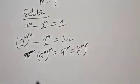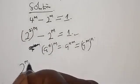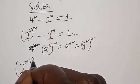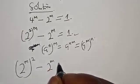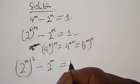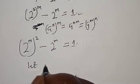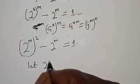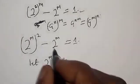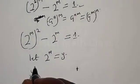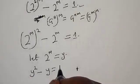Then from here we have 2 raised to power m, squared, minus 2 raised to power m equal to 1. Then we let 2 raised to power m equal to y. Therefore we have y squared minus y equal to 1.